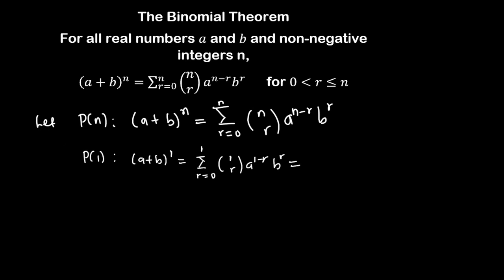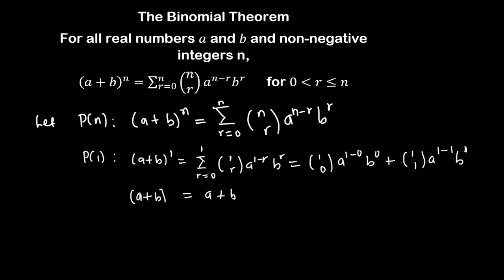If we expand this summation, starting from r = 0 we have C(1,0) times a raised to power one minus zero, times b raised to power zero, plus C(1,1) times a raised to power one minus one, times b raised to power one. Now C(1,0) is one, a raised to power one is a, and b raised to power zero is one, so the first term is a. C(1,1) is one and a raised to power zero is one, so the second term is b. Therefore the left hand side equals the right hand side.